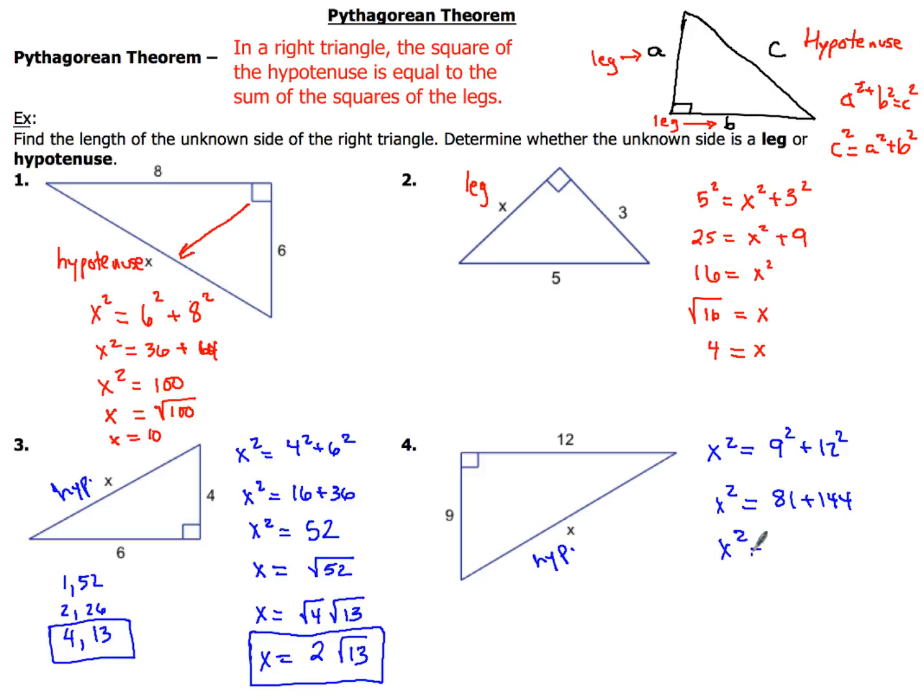Now, it might take you a little bit to add that up, but when you do, 81 plus 144 gives you 225. So X is gonna be the square root of 225. Now, when you simplify that, that's gonna be really, really nice, because the square root of 225, the positive one, is 15.